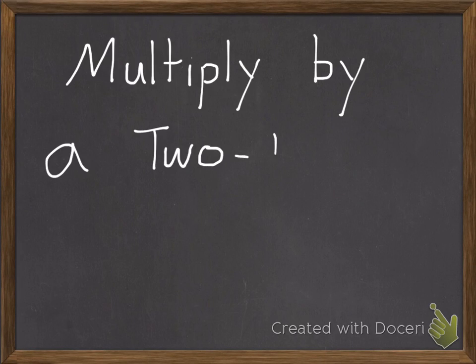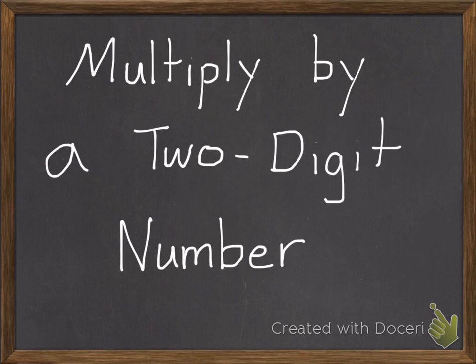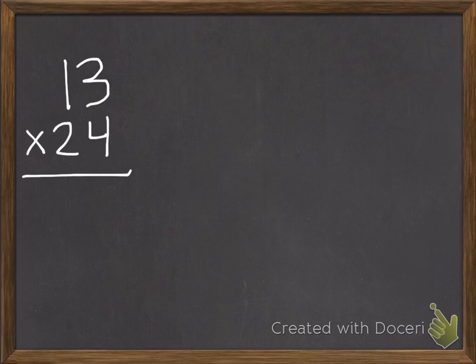Today we're going to multiply by a two-digit number. My first example is 13 times 24. We're going to be using a couple of strategies today. We're going to learn the standard method. We're also going to use the distributive property, which we learned in our past lesson. And at the end of this video, I'm going to teach you another strategy where you can break it apart even more.